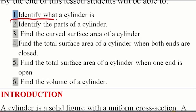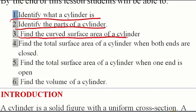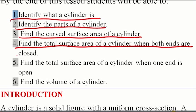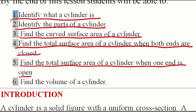By the end of this lesson, students will be able to: first, identify what a cylinder is; second, identify the parts of a cylinder; third, find the curved surface area of a cylinder; fourth, find the total surface area of a cylinder when both ends are closed; fifth, find the total surface area when one end is open; and finally, find the volume of a given cylinder.